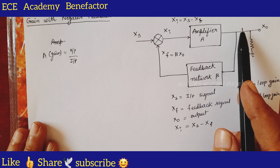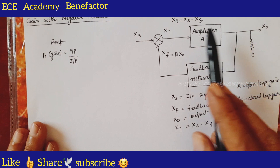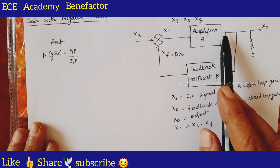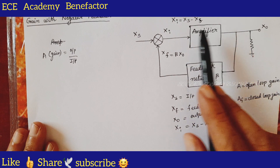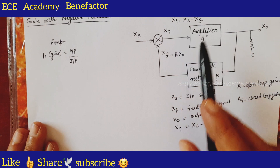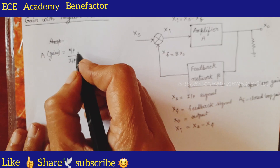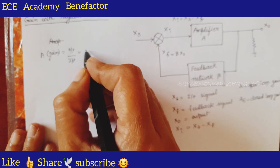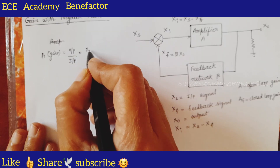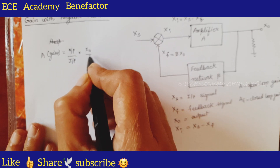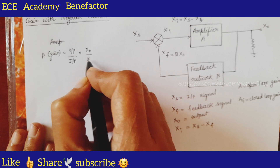The open loop gain is x_naught by x_i. The output of this amplifier is x_naught and the input is x_i, so this gain will be equal to x_naught by x_i.